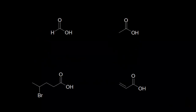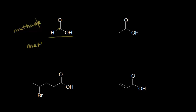Let's look at the nomenclature and physical properties of carboxylic acids, starting with nomenclature. If we wanted to name this carboxylic acid — it's the simplest one possible — there's one carbon, so a one-carbon carboxylic acid. If we had a one-carbon alkane, we would call that methane. To name a carboxylic acid, you drop the E ending and add oic acid, so this one would be methanoic acid.